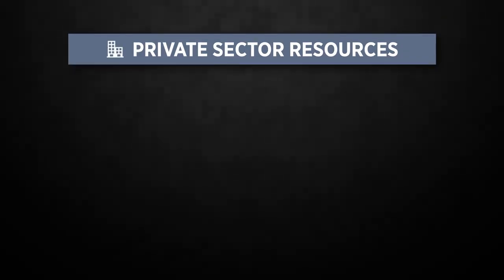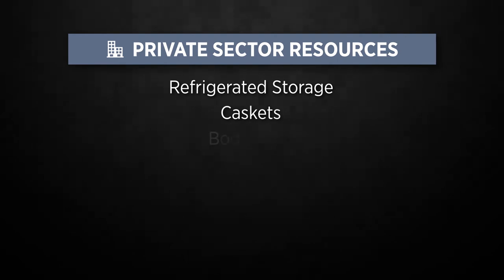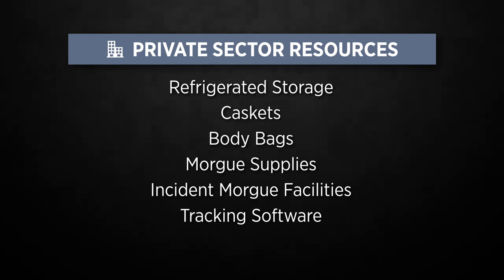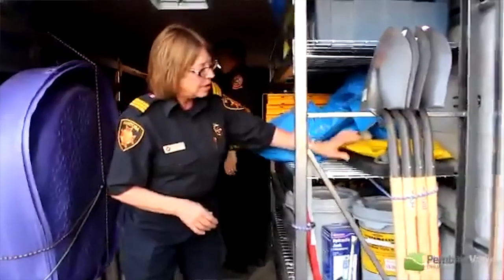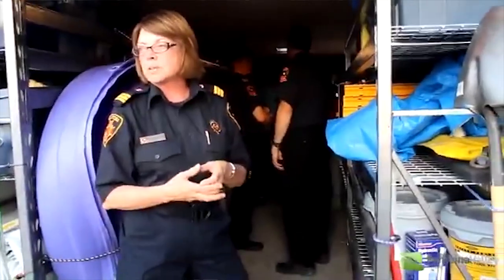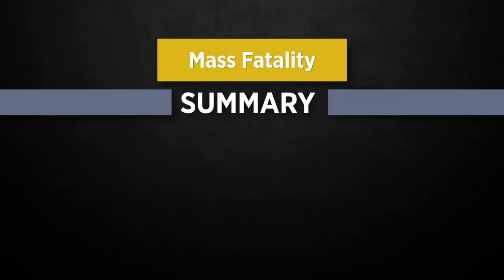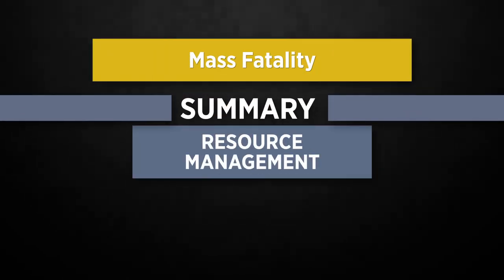The private sector may provide refrigerated storage — mobile and fixed units — caskets, body bags, morgue supplies, facilities to host additional incident morgues, fatality management tracking software, and technically skilled personnel. The vendors around California provide the personal protective gear, the body bags, the Tyvek suits, the gloves, and all the equipment needed to do body recoveries and help in the fatality management process.